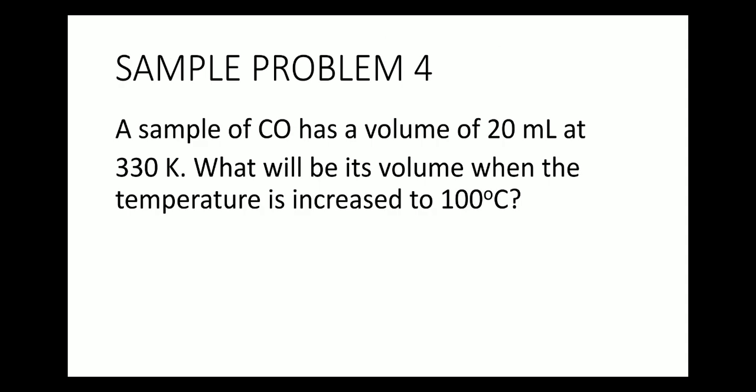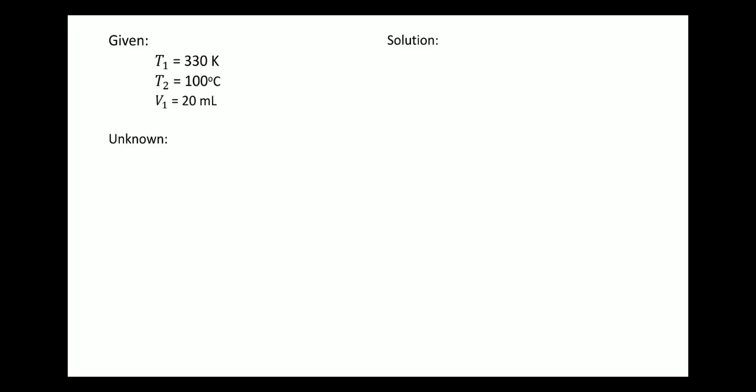Next problem. A sample of carbon monoxide has a volume of 20 mL at 330 Kelvin. What will be its volume when the temperature is increased to 100 degrees Celsius? Given: T1 is 330 Kelvin, T2 is 100 degrees Celsius, and V1 is 20 mL. The unknown is V2, the final volume. Since T1 is already in Kelvin, no conversion is needed for it.